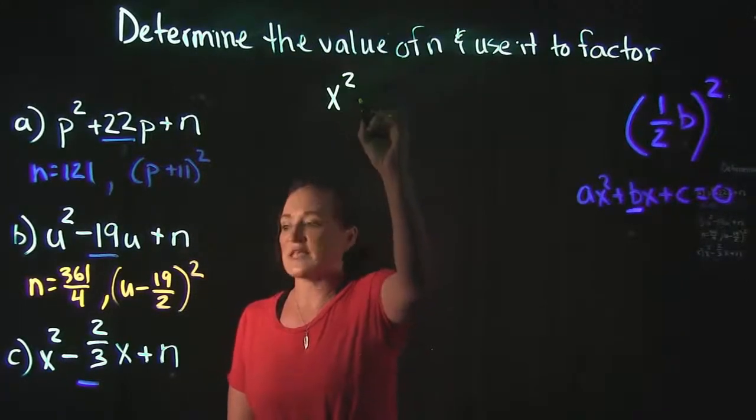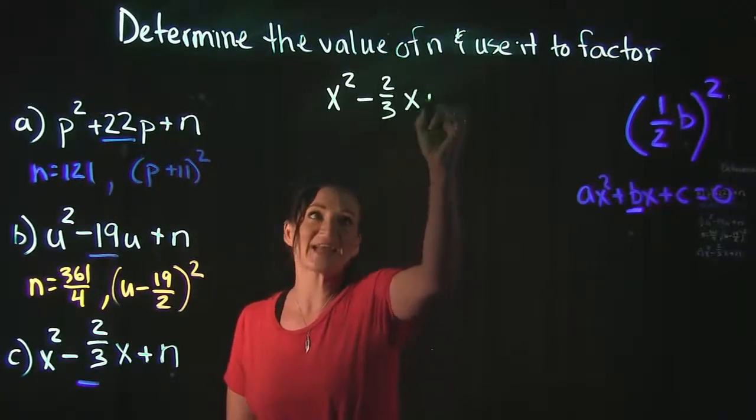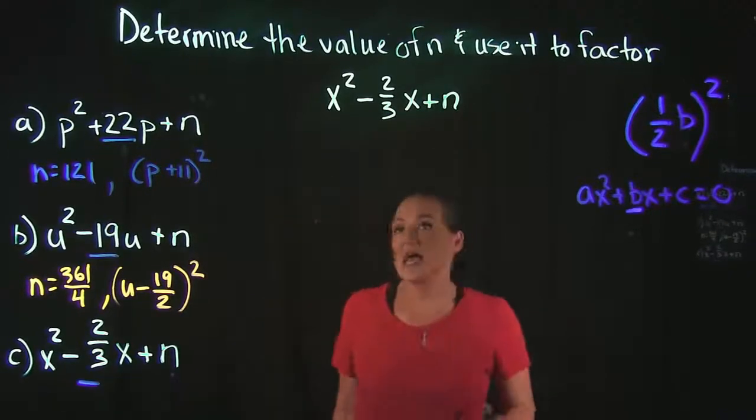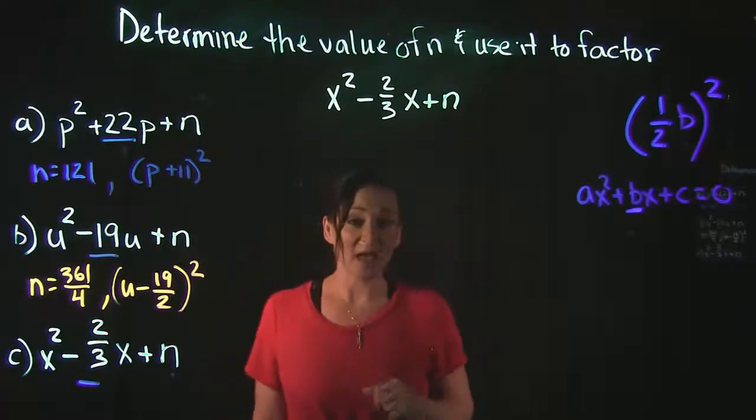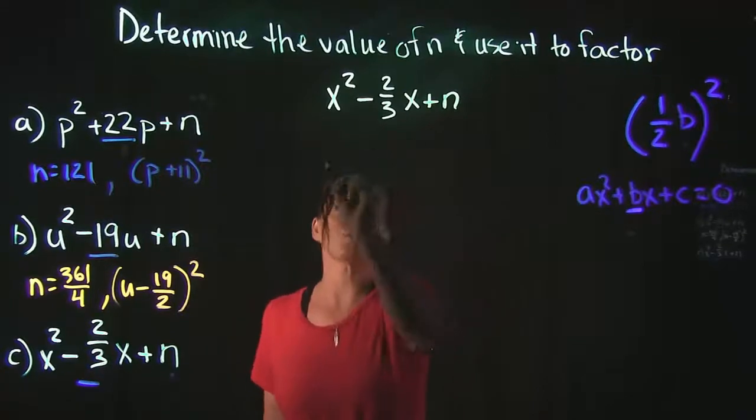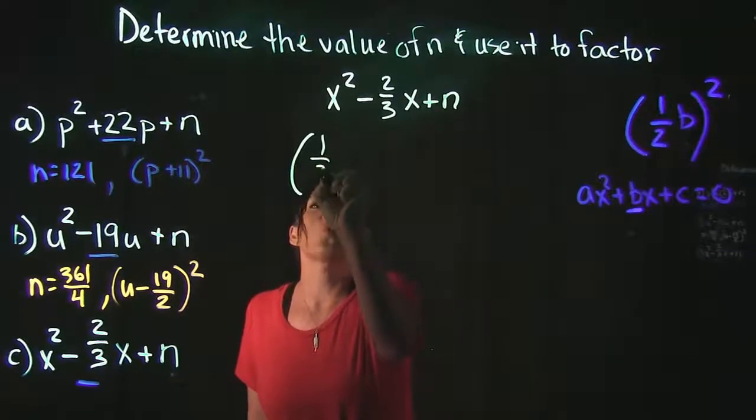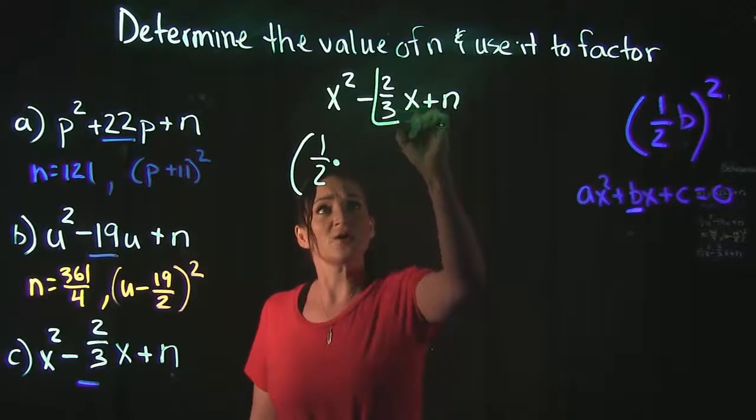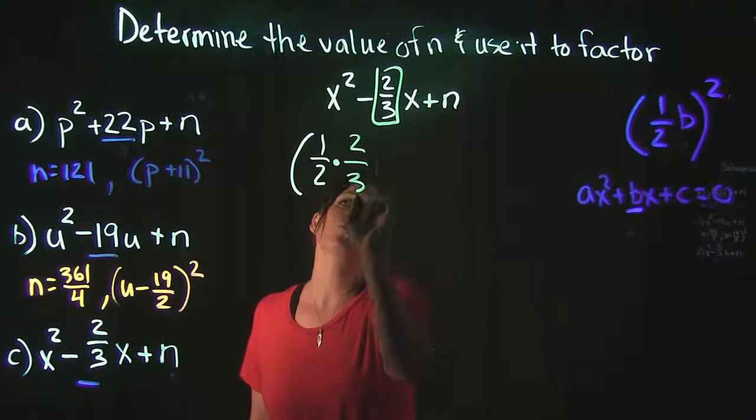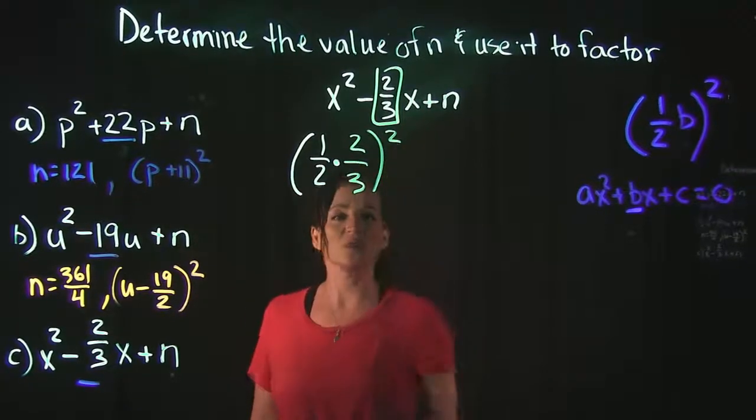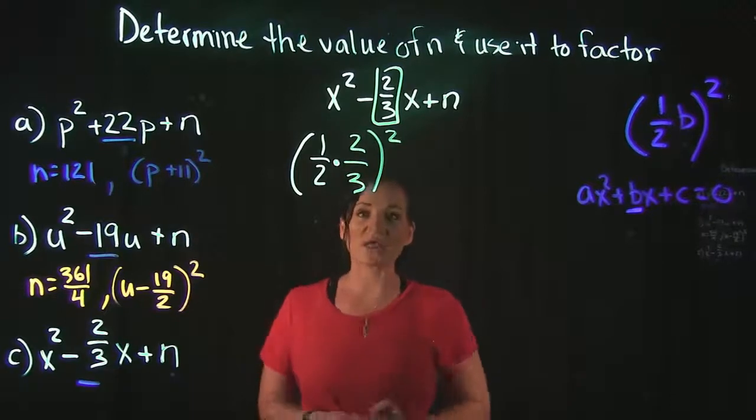Focusing on the last example, example c is x squared minus 2/3 x plus n. Again, our first step is to find n, which means we need to plug it into the formula. So the formula is one half times b. b here is going to be 2/3, and then whatever we get when we do that, we're going to square it.